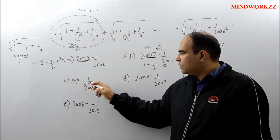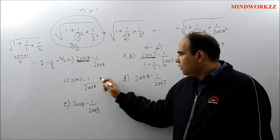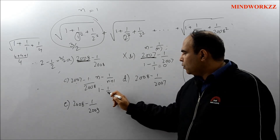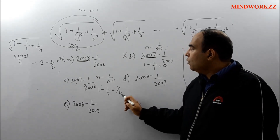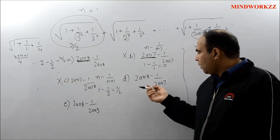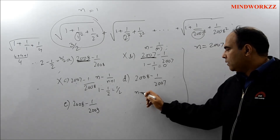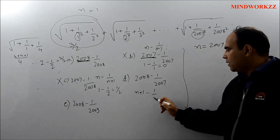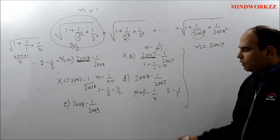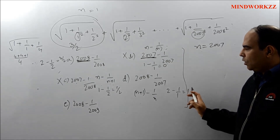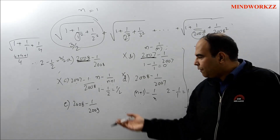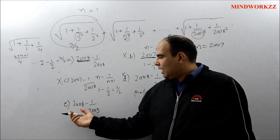Option C represents (n−1)/(n+1); with n = 1 this becomes (1−1)/(1+1) = 0/2 = 0... actually it gives 1 − 1/2 = 1/2, which is not equal to 3/2, so Option C is rejected. Option D represents (n+1) − 1/n; with n = 1 this gives 2 − 1 = 1, which does not match 3/2, so Option D is also eliminated.